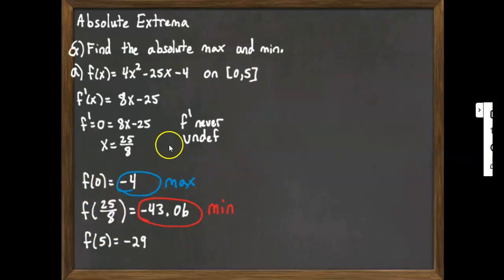Okay, but 25 eighths is in the interval 0 to 5, so therefore that counts. And it turns out in this problem, it is the minimum value. The maximum value our function takes on is negative 4.